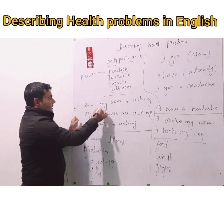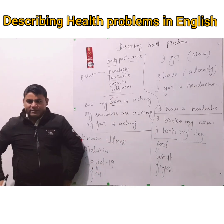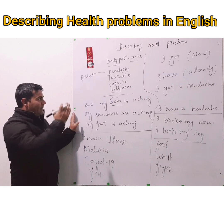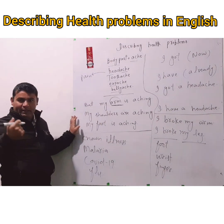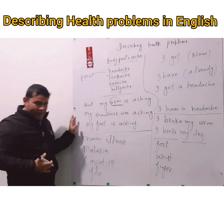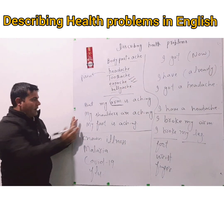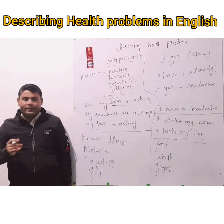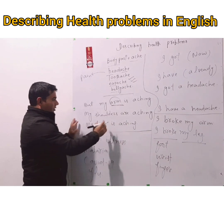For body parts with which we cannot use '-ache' — for example your arm, finger, shoulder, or foot — we use a different structure: 'My arm is aching,' 'My finger is aching,' 'My shoulders are aching,' 'My foot is aching.' You cannot say 'I have an arm ache' or 'I have a footache.' There are certain body parts like stomach where you can use '-ache,' but for the remaining ones, use 'my [body part] is aching.'